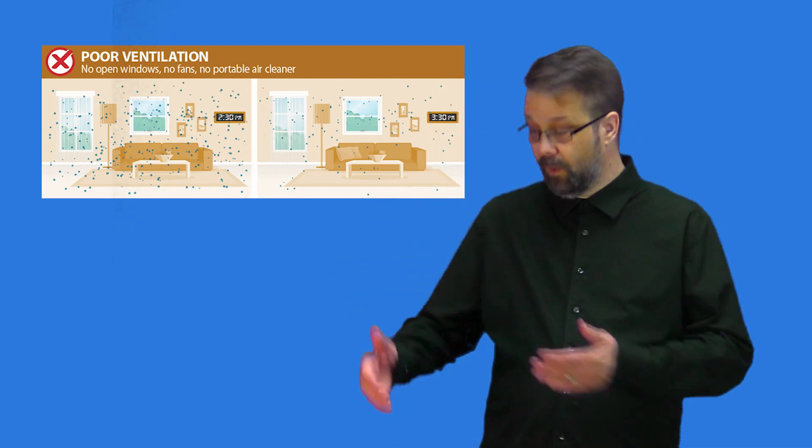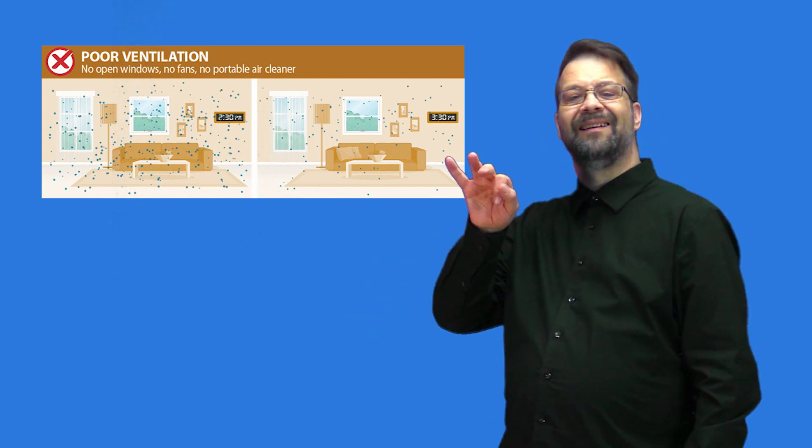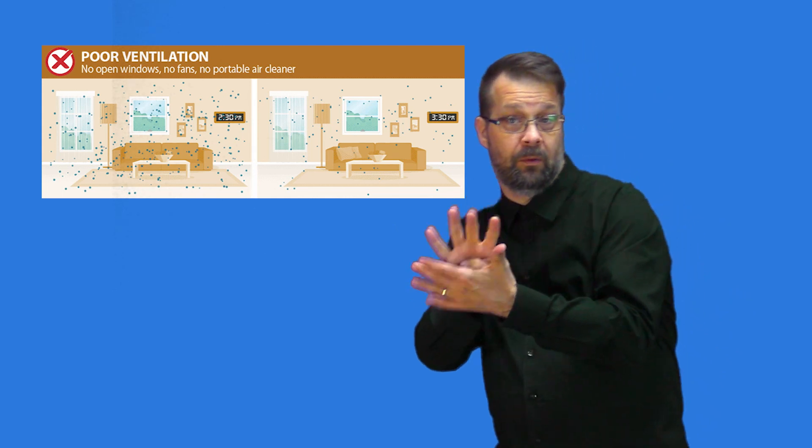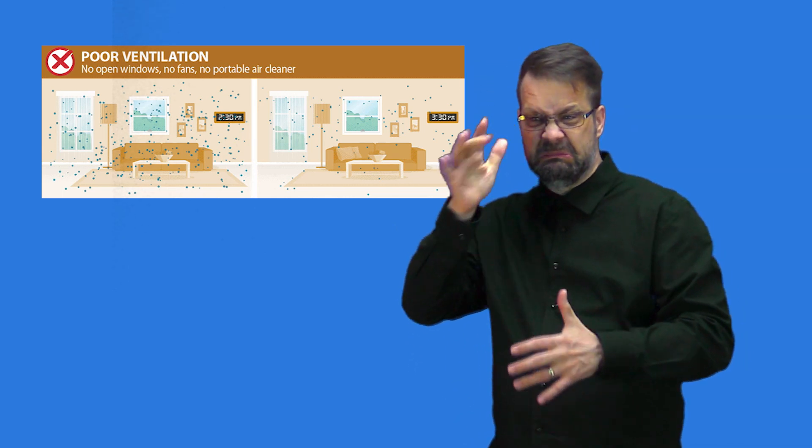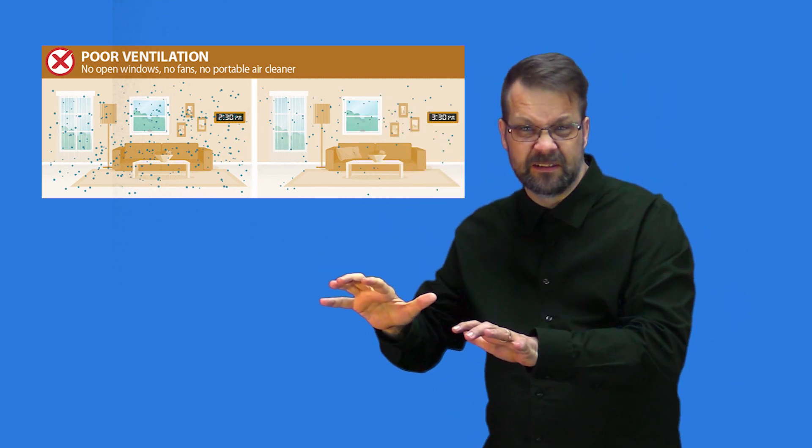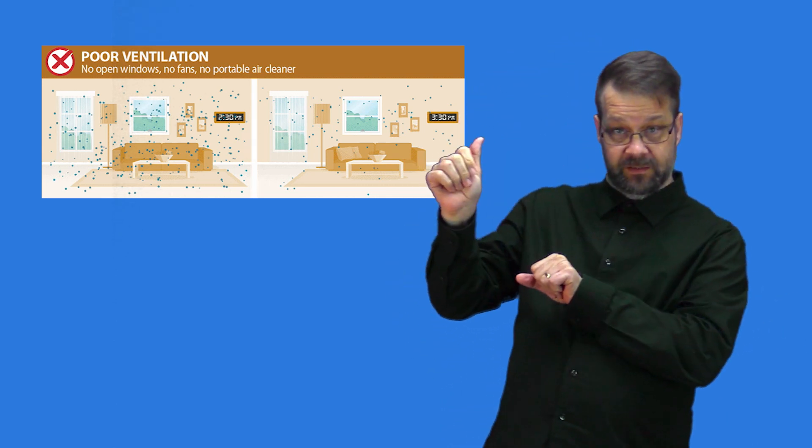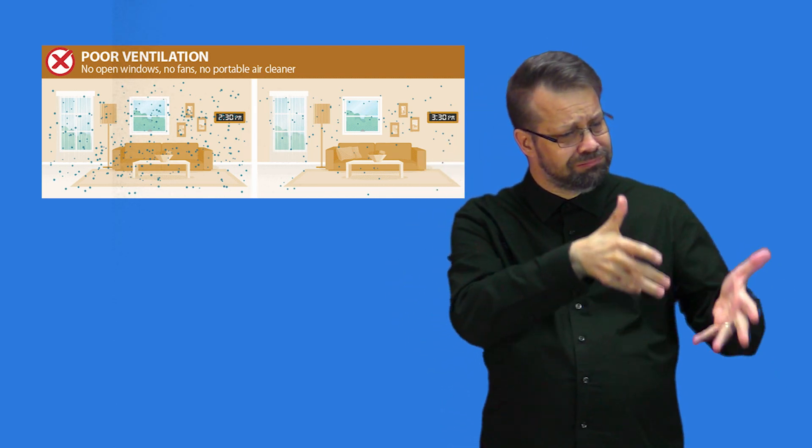The picture on the left shows how many virus particles would be in the air after a four-hour visit by an infected person. And the picture on the right shows how many virus particles would still remain in the air one hour later with poor ventilation.